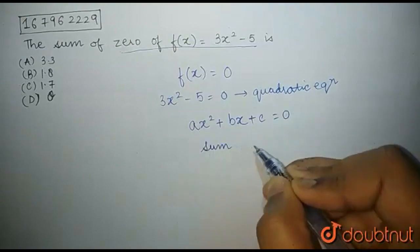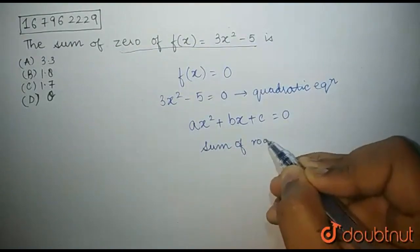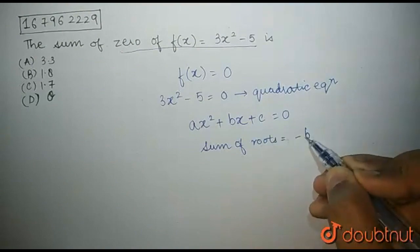What we know is that the standard form of a quadratic equation is ax² + bx + c equal to 0, where the sum of roots is -b/a.